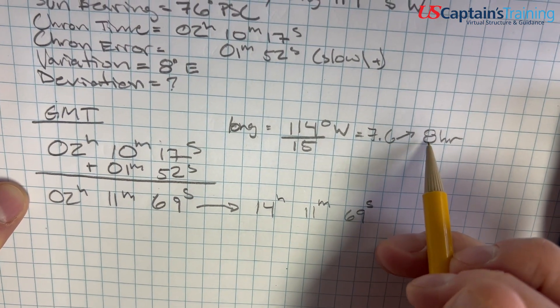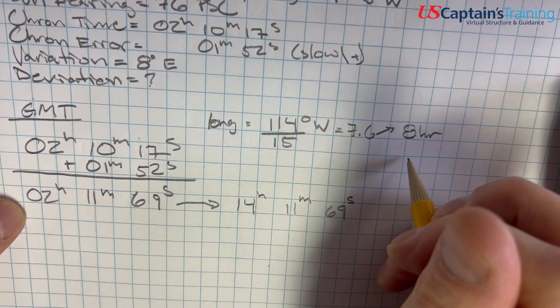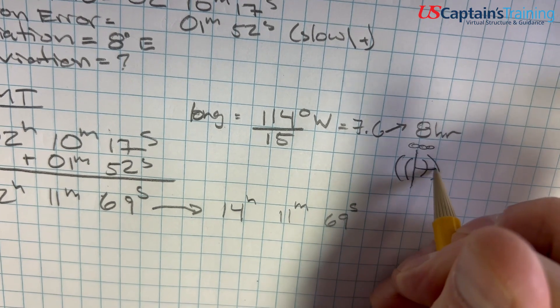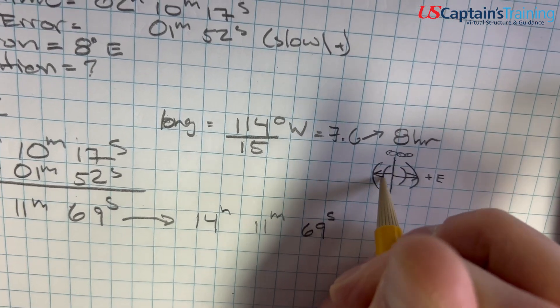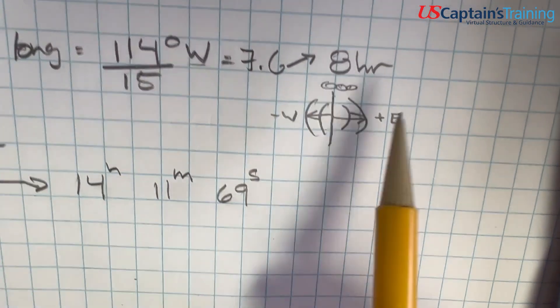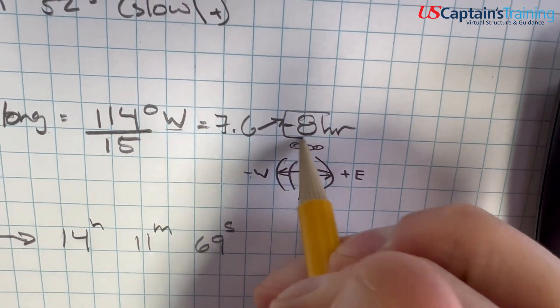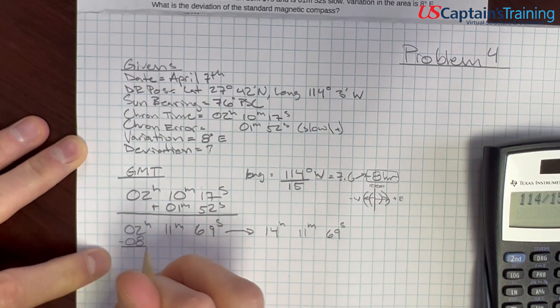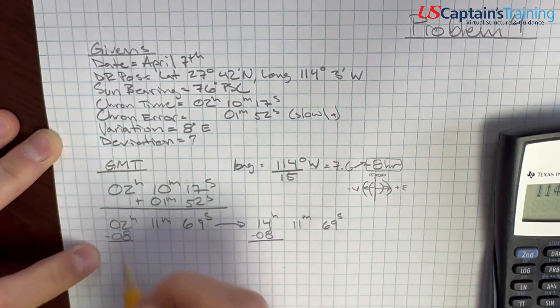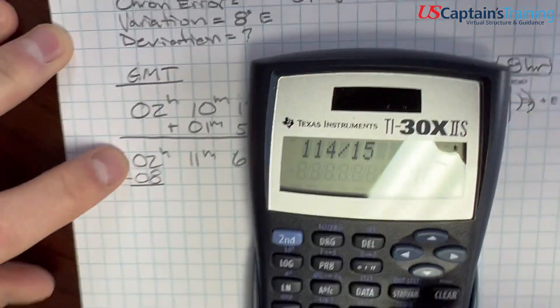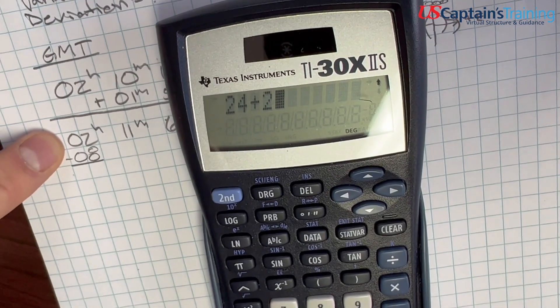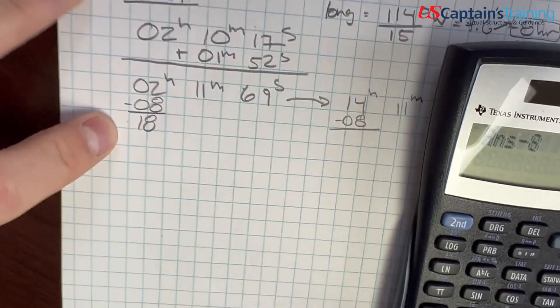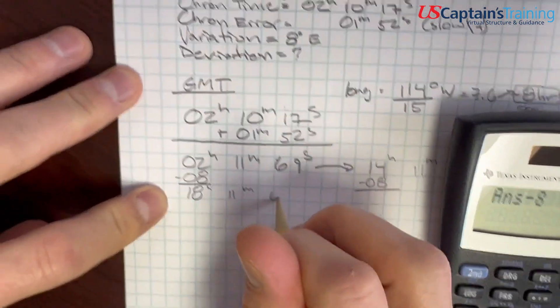So we need to figure out how many hours away from Greenwich Mean Time we are. We can do that by taking the longitude, which is 114 degrees west, and dividing it by 15 degrees per time zone. 114 divided by 15 equals 7.6. We round up to the nearest whole hour, so 8. And now do we add or subtract this 8 hours from GMT?